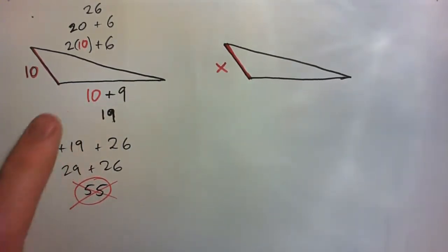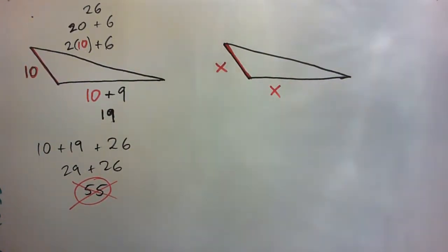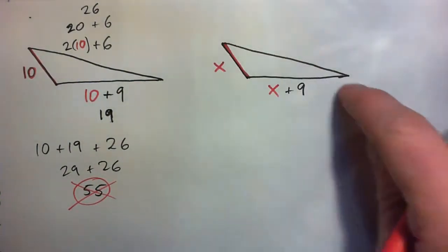If this side is X, what will this side be? Write it down. Did you get it? X plus 9. And what about this side here?